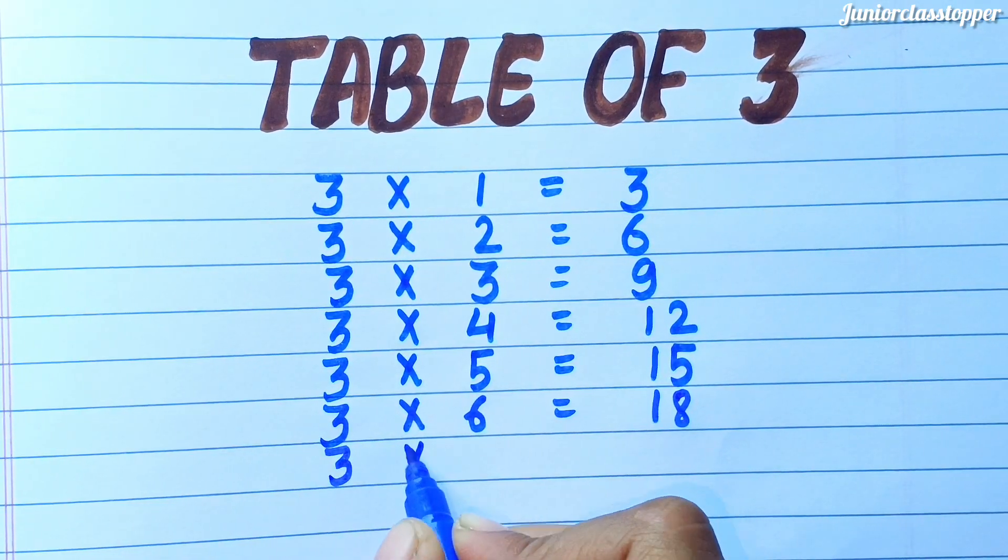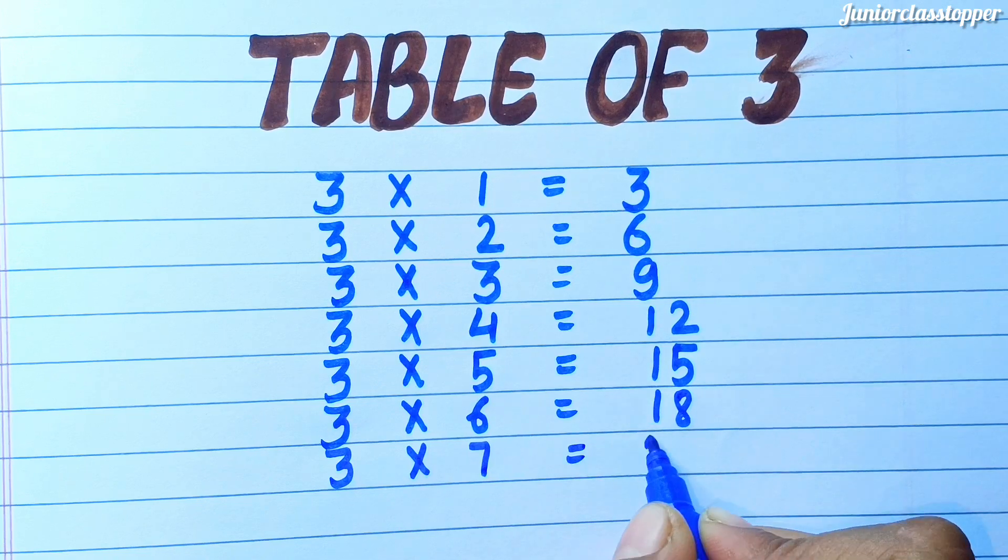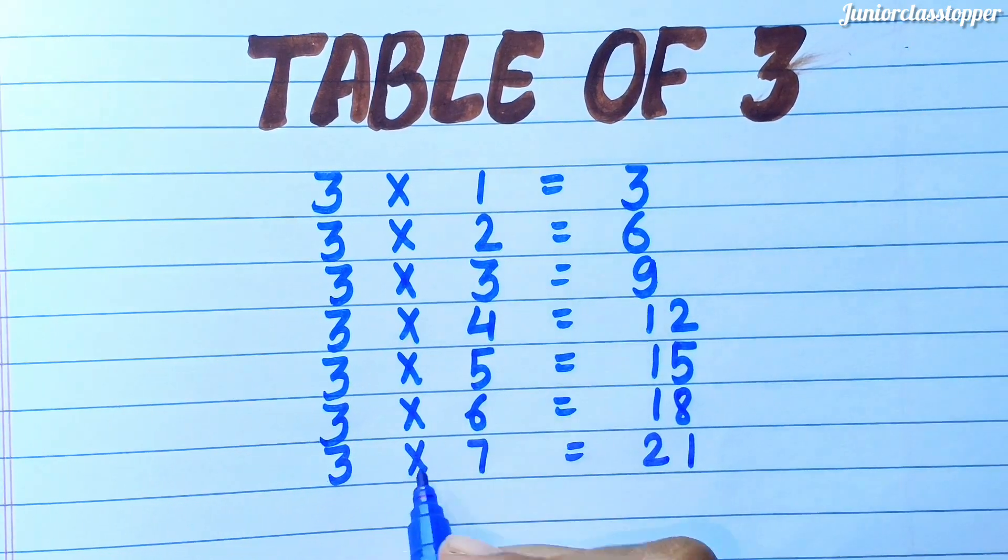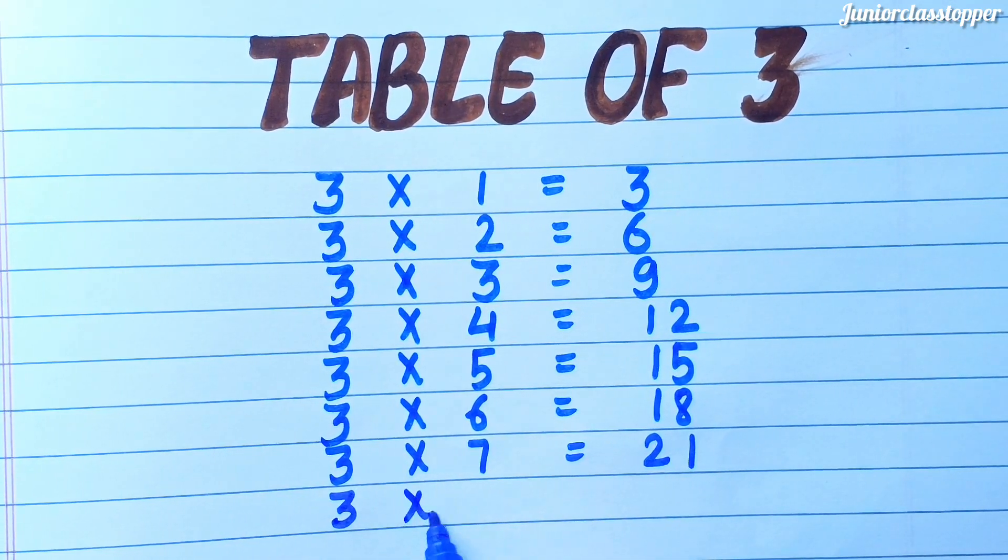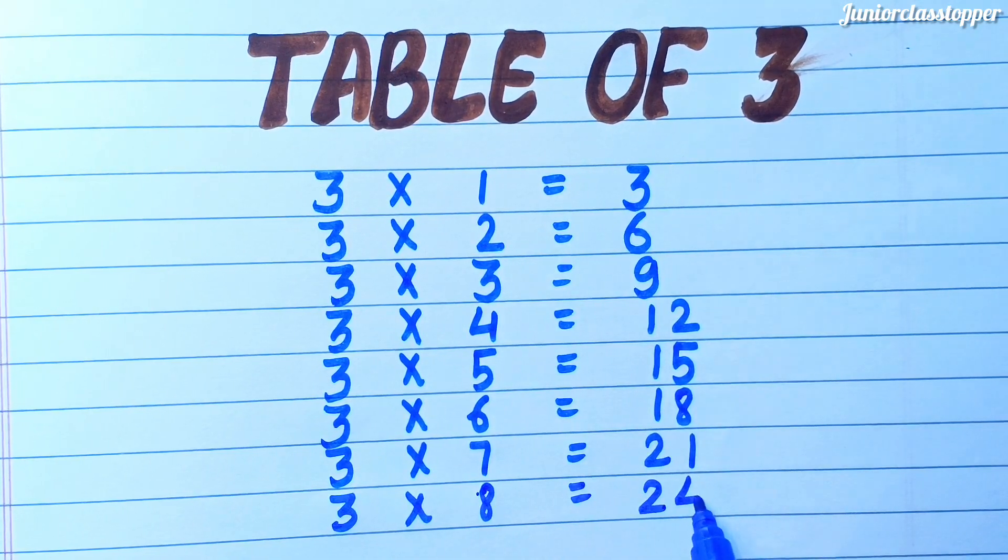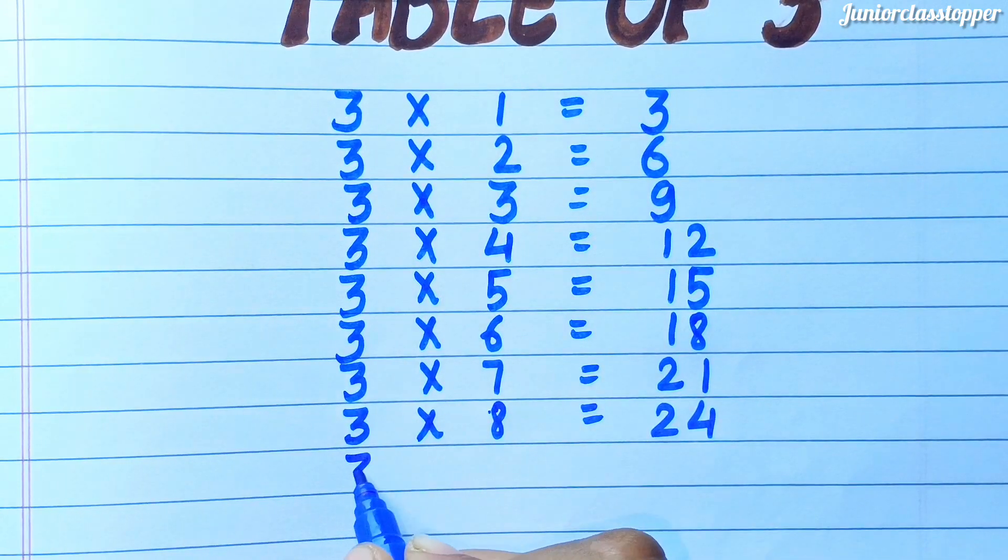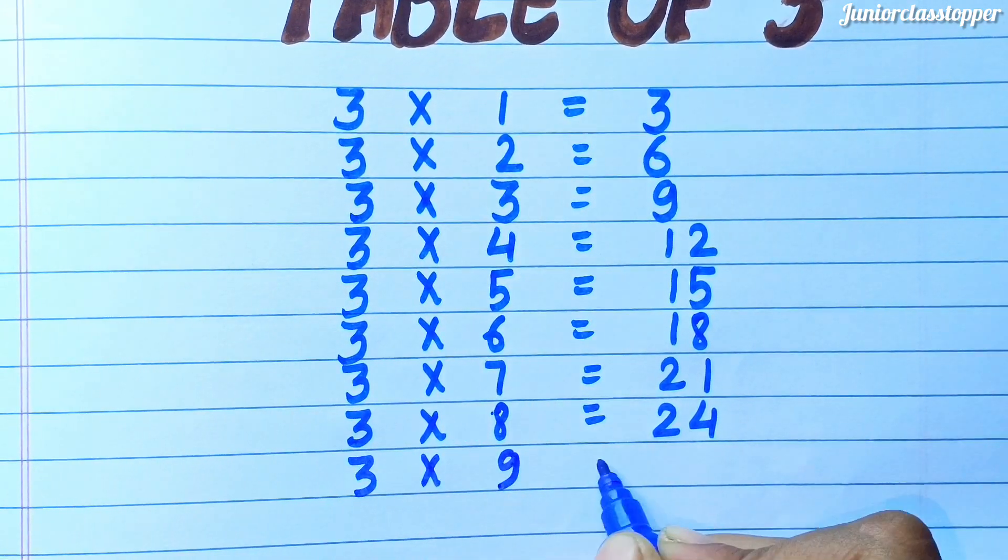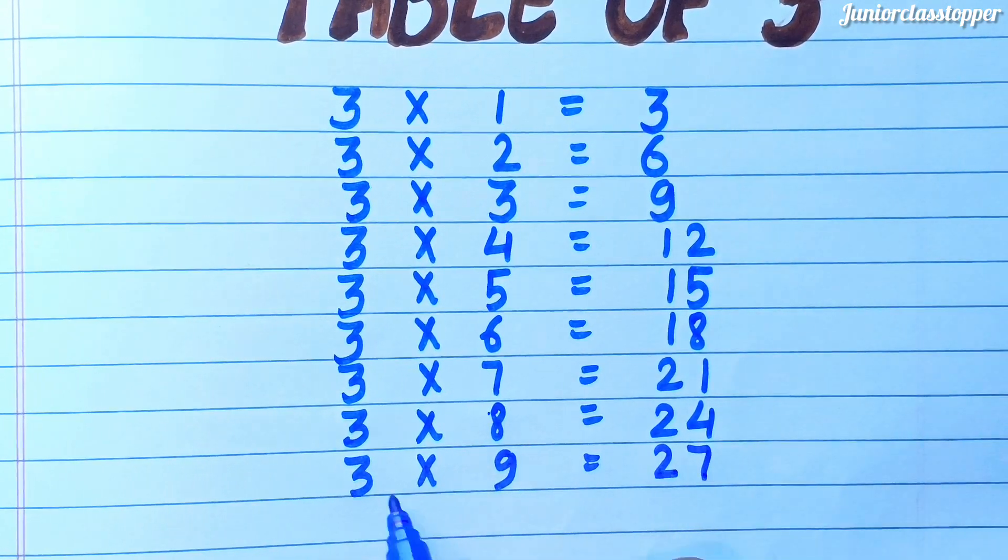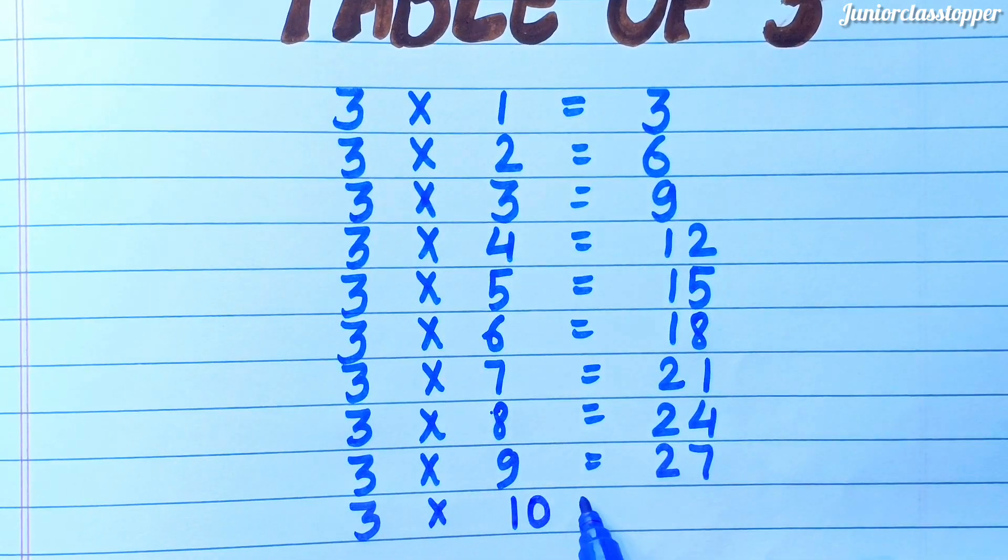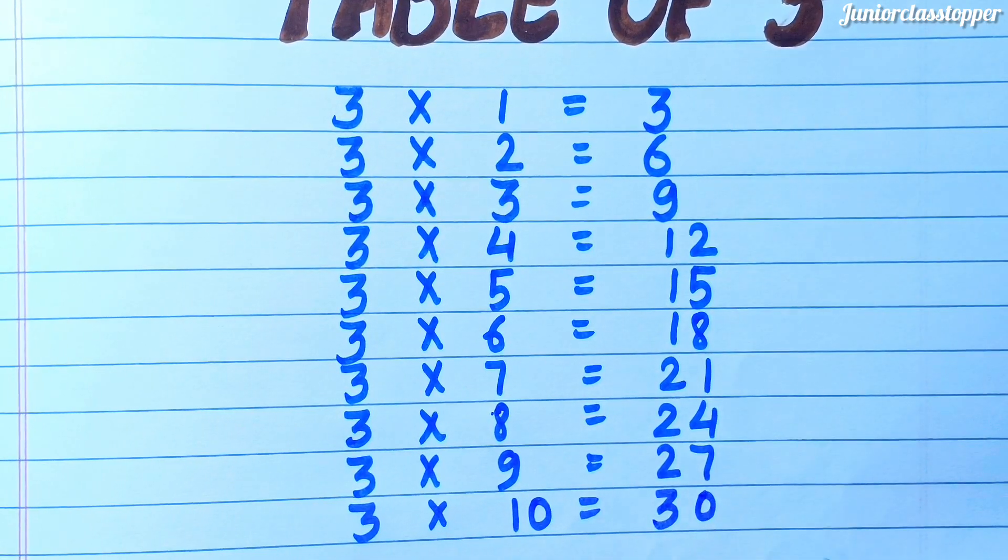Three sevens are twenty-one, Three eights are twenty-four. Three nines are twenty-seven, Three tens are thirty.